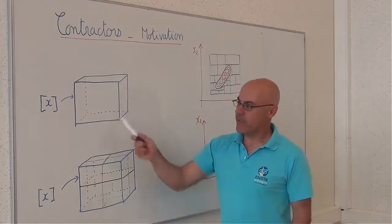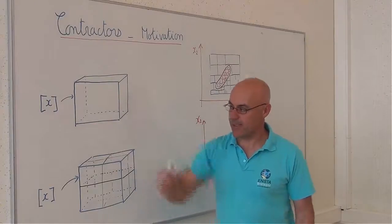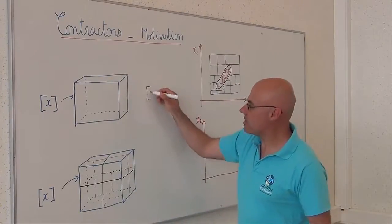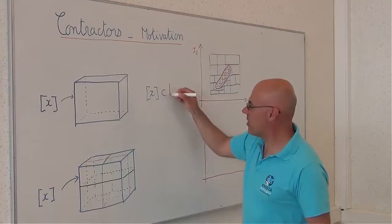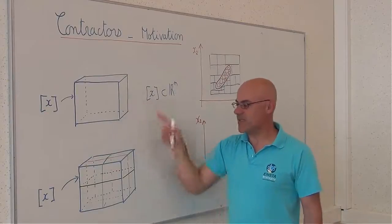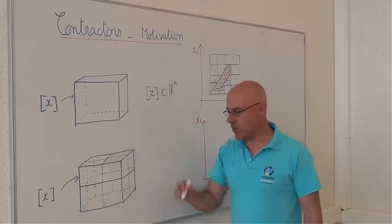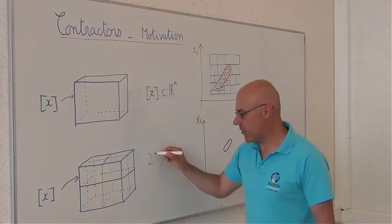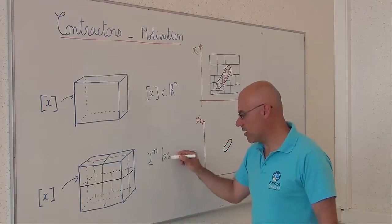To understand, consider a box x, which is a subset of R^n. If I bisect this box once in all directions, then I will generate 2 power n boxes.